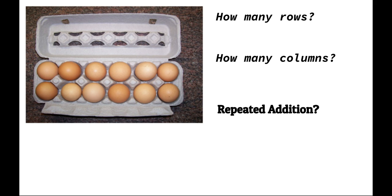Here's one more for you — go ahead, pause the video and solve it. There's one row and two rows. And how many columns? Let's count them: one, two, three, four, five, six. There are six columns. So the repeated addition equation is six plus six — there are six in this first row and six more in the second row. Six plus six is 12. There are 12 total objects.